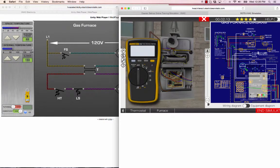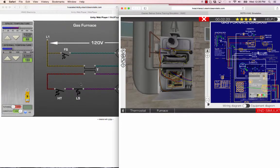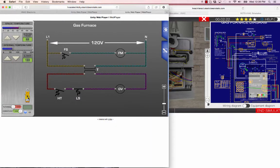You could show them what they're looking at in the wiring diagram on the actual simulated piece of equipment. This is even easier when you have the full HVAC sim that has six pieces of equipment.